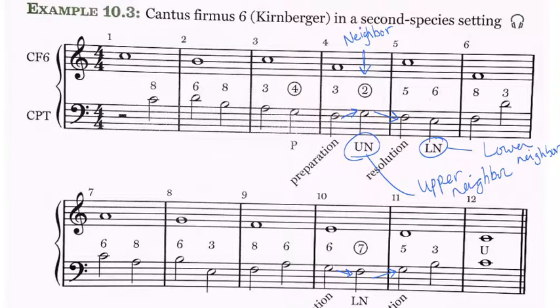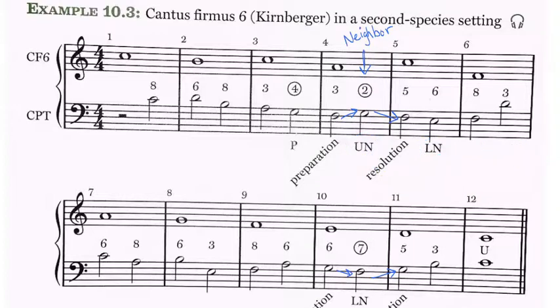So if you use neighbor tones, please label them as upper or lower neighbors. Notice again that we have the preparation and then the neighbor and then the resolution. In other words, the downbeats on either side of the neighbor have to be consonant. And remember that it must be approached and left by step. In this case, we have F, G, F. And then in the following measure, F, E, F, a lower neighbor.